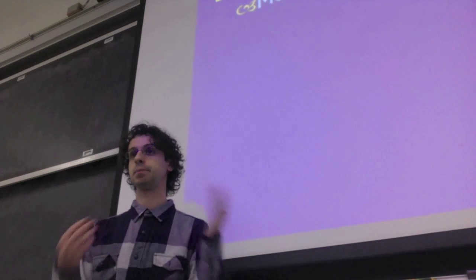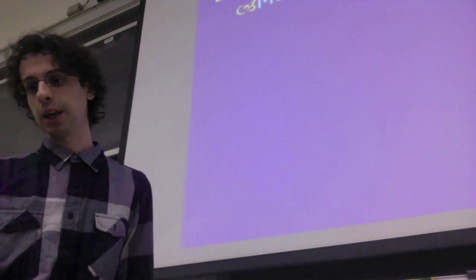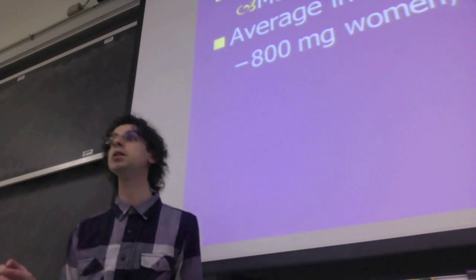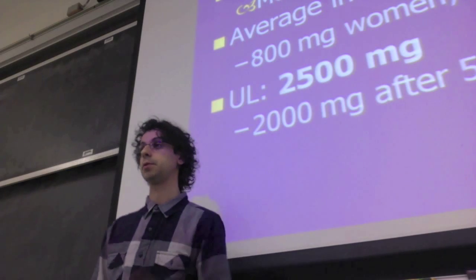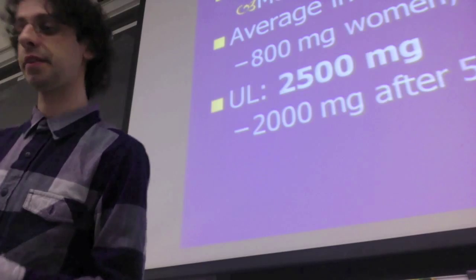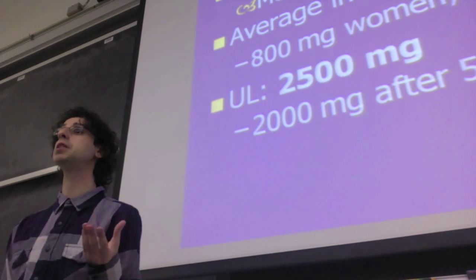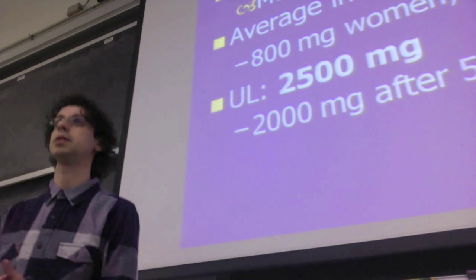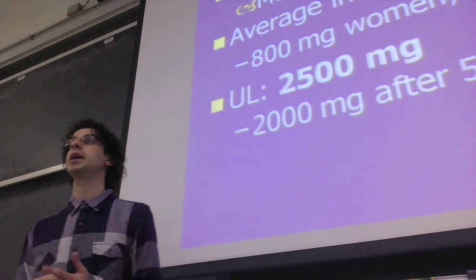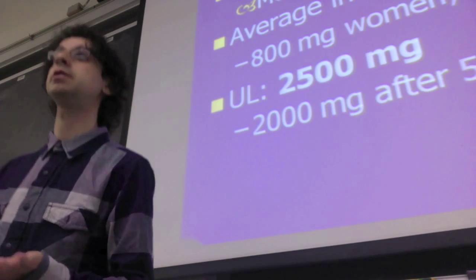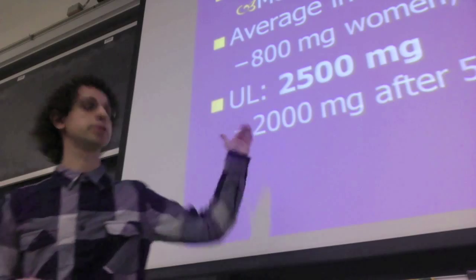The recommended daily allowance for calcium is one gram (1,000 mg). Because absorption decreases with age, it is slightly higher for older adults at 1,200 milligrams. The average intake in the U.S. is a little lower than recommended. We also have an upper limit of 2,500 milligrams because too much calcium is harmful. The gap is about 2.5 times the recommended intake, so it's easy to get not enough but also easy to get too much, especially with the trend of fortifying many foods with calcium.